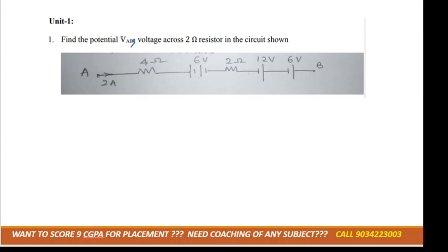See how we can solve this kind of question. First, they ask you to calculate the potential across A and B. So it means some amount of current is flowing through this - they have mentioned it also, 2 ampere.